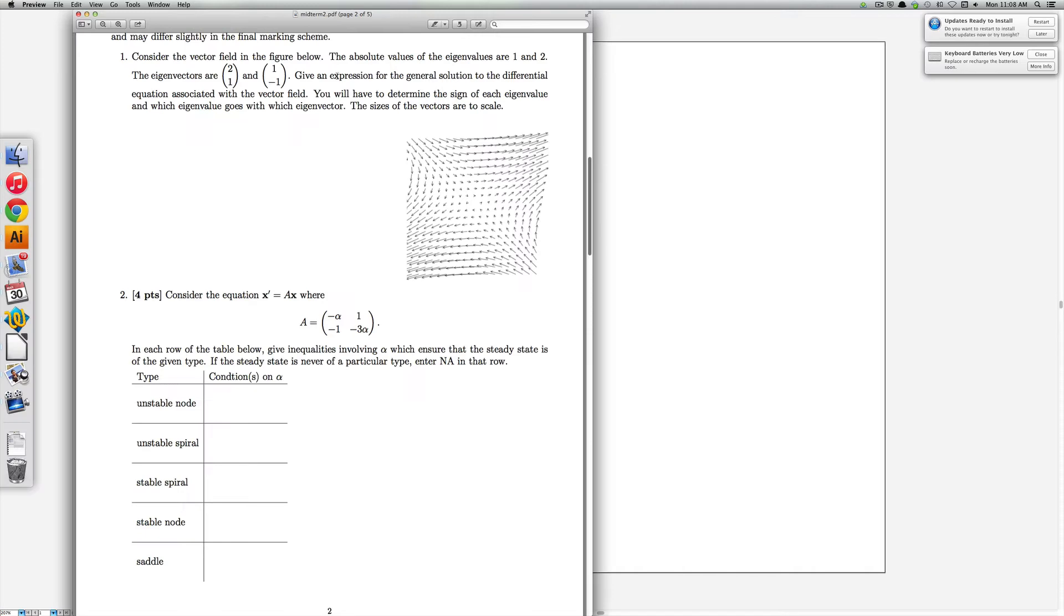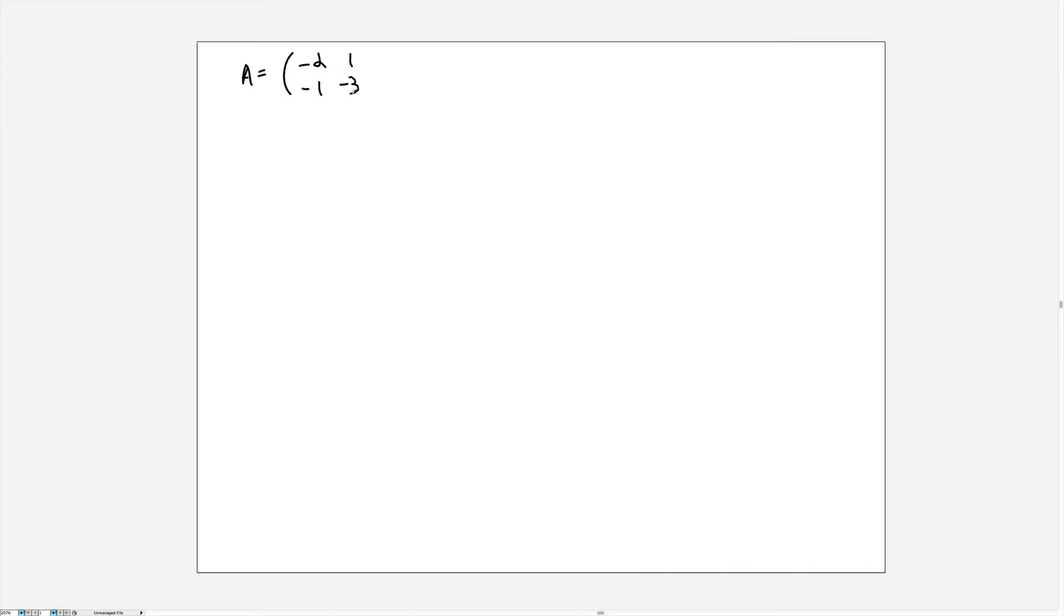First we have the matrix A is minus alpha 1 minus 1 minus 3 alpha. And I'm going to use the approach of using the trace and determinant. So lambda squared,